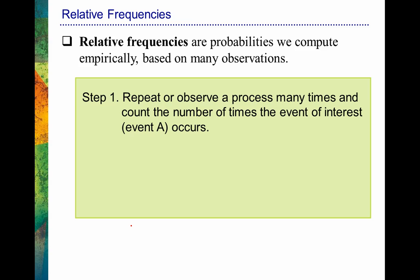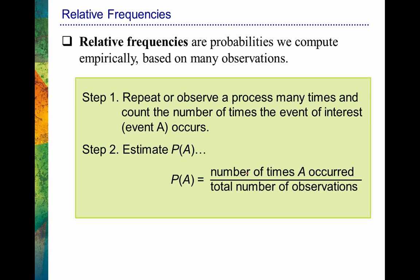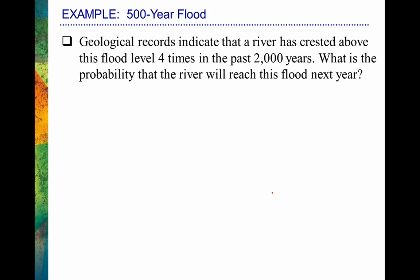So I might be trying to figure out the probability that some event, like getting heads when I flip a quarter, will happen. In order to estimate the probability of some event happening, we look at the number of times that event happened over the total number of observations. For example, if I want to figure out the probability of flipping a coin and having it turn out heads, I would flip that coin several times, figure out how many times heads occurred over the total number of flips. Let's go through some examples.